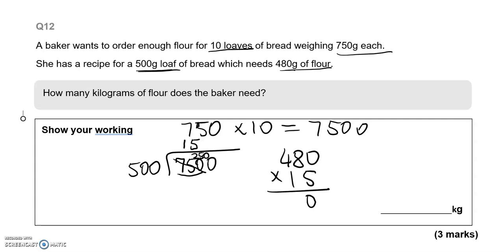5 times 0 is 0. 5 times 8 is 40. 5 times 4 is 20. And the 4 is 24. 1 times 0 is 0. 1 times 8 is 8. 1 times 4 is 4. Adding them together. 0, 0, 7,200 grams. 1,000 grams is equal to 1 kilogram. So this is going to be divided by 1,000 to give us 7.2 kilograms.